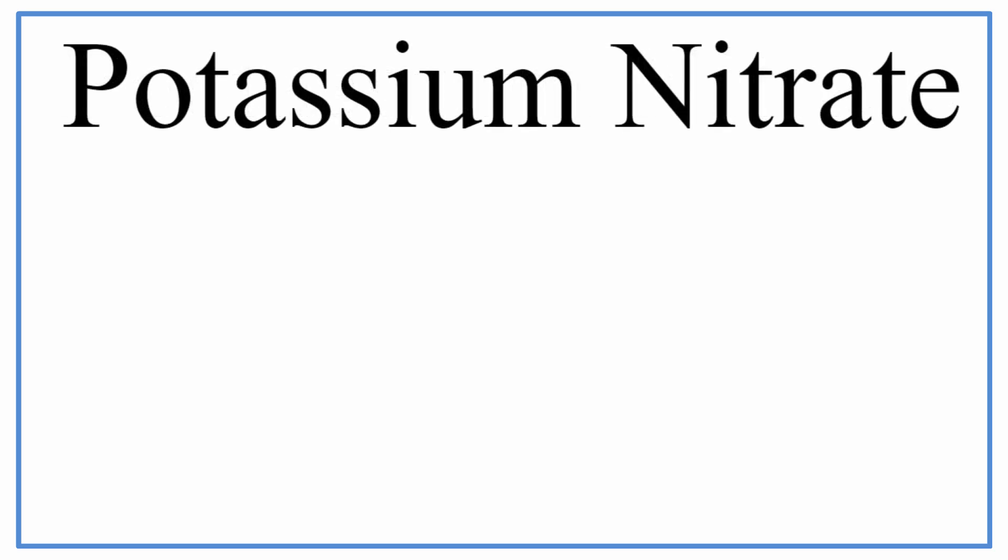To write the formula for potassium nitrate, we'll first look on the periodic table. Potassium is K, and then when we look at nitrate, that's not found on the periodic table. That's what's called a polyatomic ion, and we'll need to look that up on the common ion sheet.